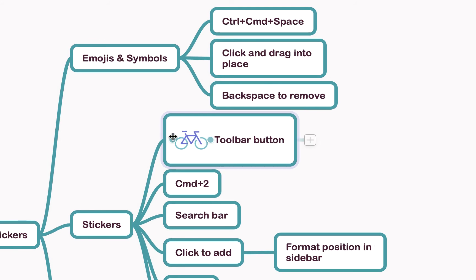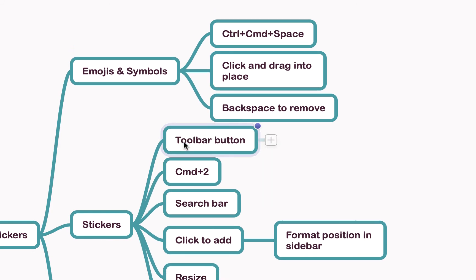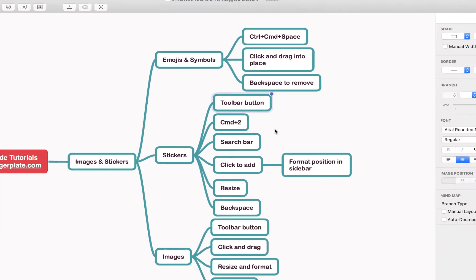To get rid of your sticker, ensure you've got it selected — as indicated by the two dots — and just hit the Backspace button. You'll see the sticker disappears but the node remains intact.